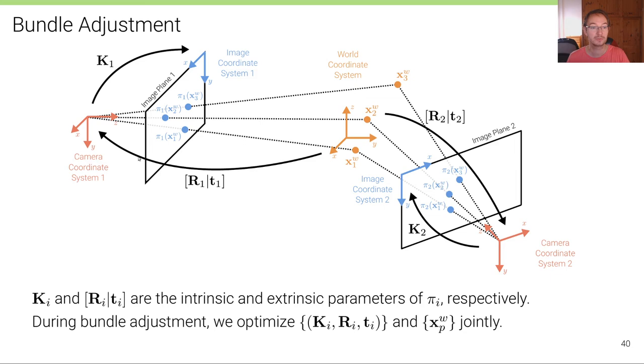And we are estimating now the pose of all the cameras. Now two cameras are shown here, but of course there's much more. And there's also much more than just three landmarks. But to keep this illustration simple, I've just chosen two cameras and three landmarks to illustrate this. So during bundle adjustment we optimize the camera parameters as well as the 3D landmarks jointly.